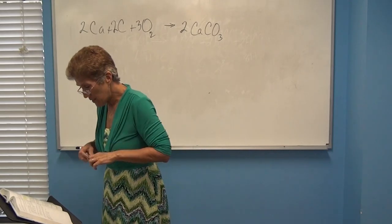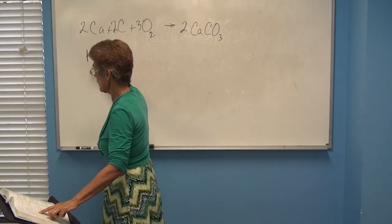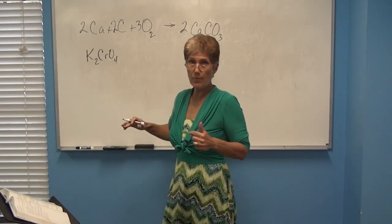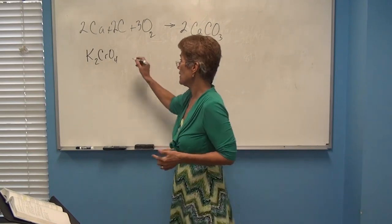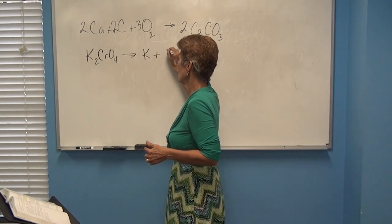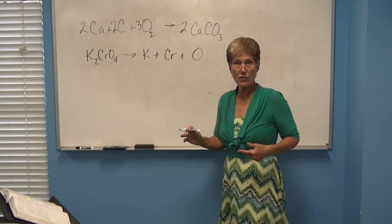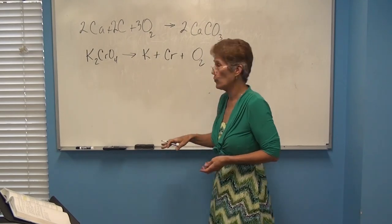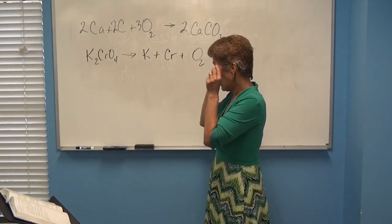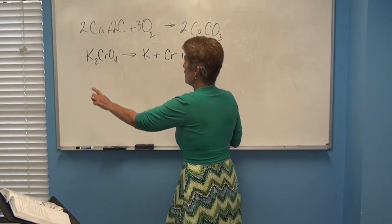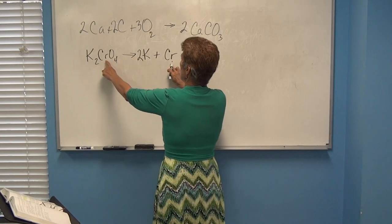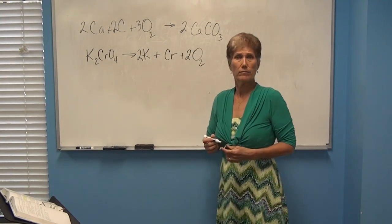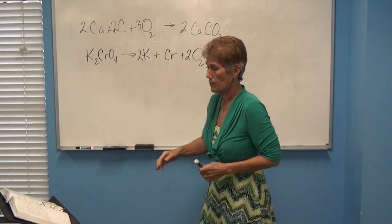Next is a decomposition reaction of potassium chromate. Decomposition takes it down to constituent elements. H, N, O get the little twos where applicable; oxygen here is not in group 7's first four. Right away there are two potassiums, so put a 2 there; one chromium; four oxygens, so put a 2 in front of O2. That gives a balanced decomposition reaction.